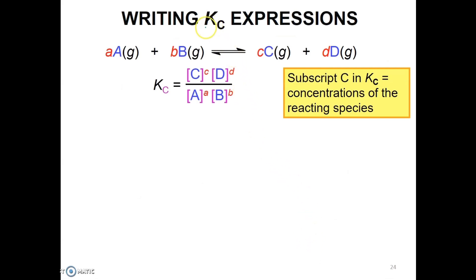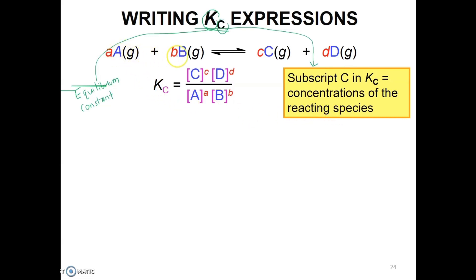The letter K represents the equilibrium constant, while the subscript C in the Kc expression represents the concentrations of the reacting species. Consider the general equation: aA gas plus bB gas produces cC gas plus dD gas. The Kc expression is the concentration of the product species raised to the power of their mole coefficients, over the concentration of reactants raised to the power of their mole coefficients.